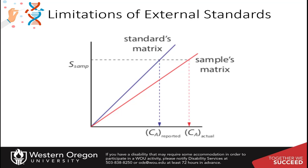We left Chapter 5 and Part 1 looking at external standards. One of the limitations of external standards is that it doesn't always match the matrix that your sample is actually in. This can cause discrepancies, as the matrix can have interferences that either boost the signal of the sample or under-report the analyte because of matrix interference, depending on which way that interference goes.